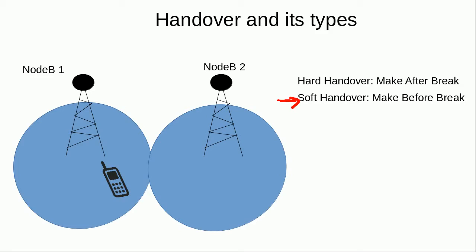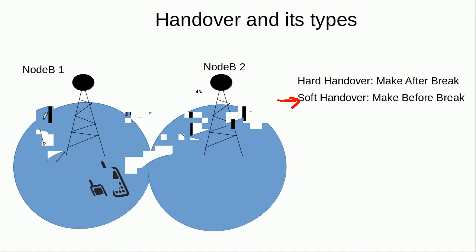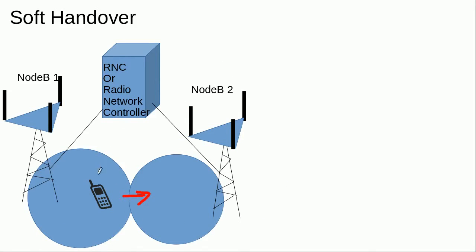Now we come to the procedure of soft handover — how soft handover takes place. For example, this is a mobile which is connected to Node B number 1 and it is moving towards Node B number 2. This mobile would not only be measuring the power received from Node B number 1, but also the power received from Node B number 2 and other neighboring Node Bs. This information about the received power would be sent to the Radio Network Controller via Node B number 1, and it is called the measurement report.